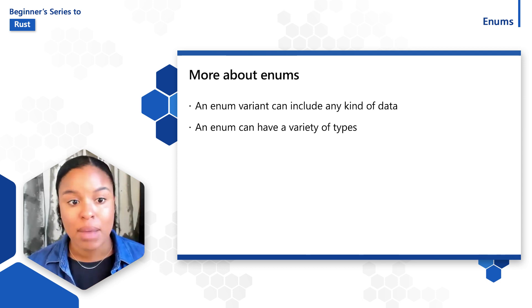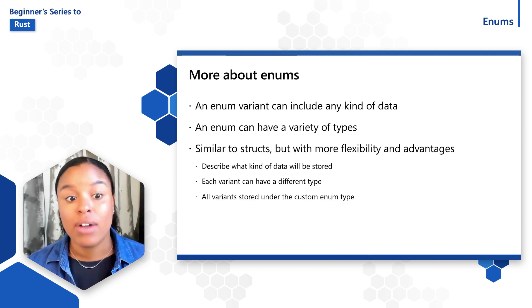Enums are like structs, but have more advantages. First, they only describe what kind of data will be stored, not the actual data. Additionally, each variant in an enum can have different types and amounts of associated data, and structs don't have as much flexibility there.